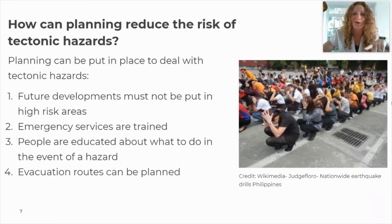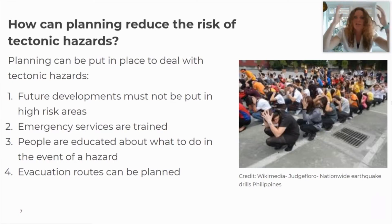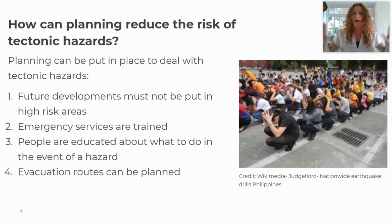Another strategy is to educate people about what to do in the event of a hazard. In Japan, schools do earthquake drills instead of fire drills — you can see people in the picture kneeling with hands on their heads to protect from falling debris. Two things that could save your life in an earthquake: get under a table because it's strong and can protect you if part of the roof collapses; and stand in a doorframe, which is the strongest part of any building and won't collapse.